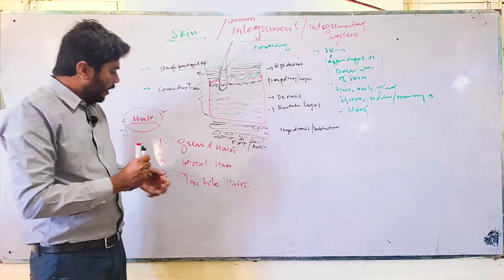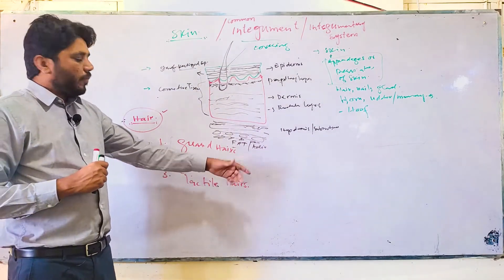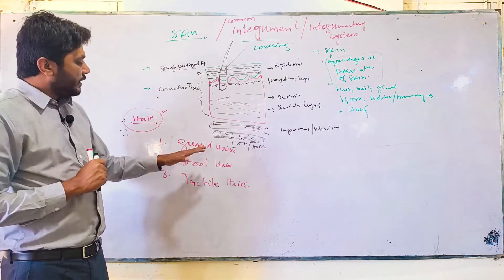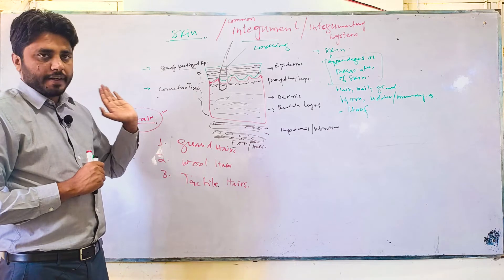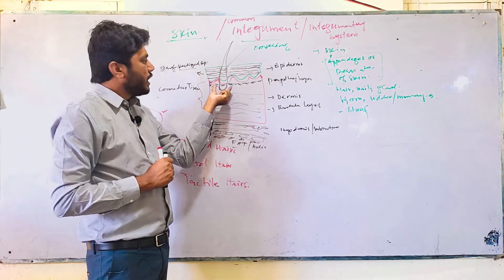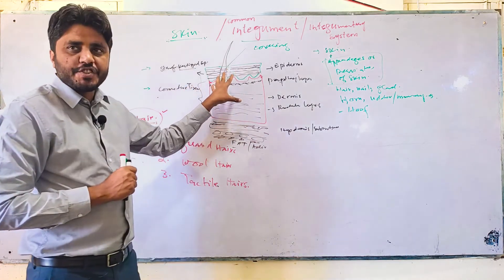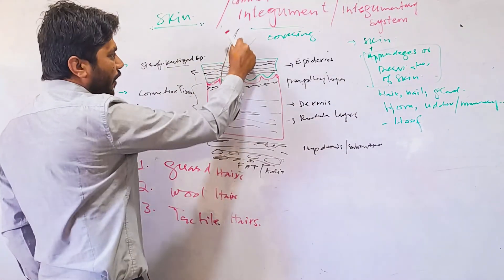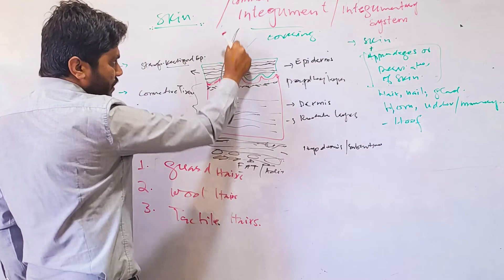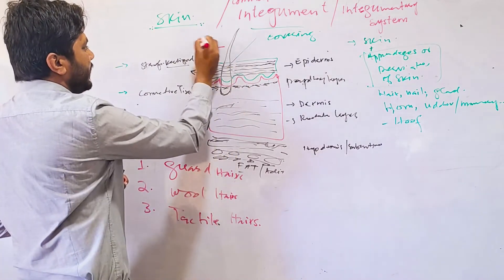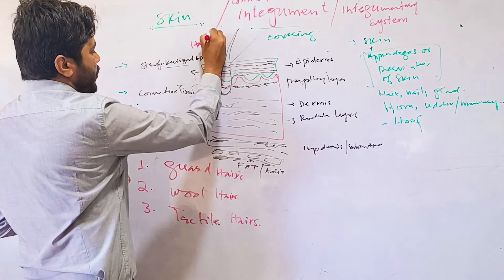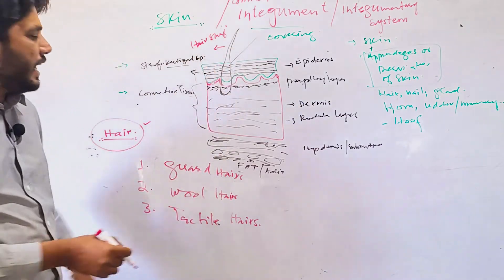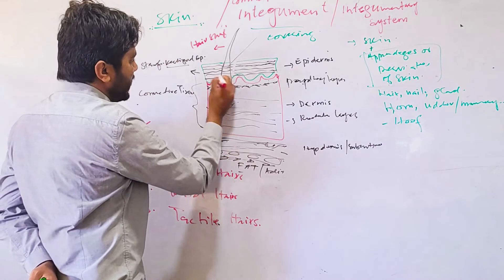What is the difference between tactile hair and other types? You need to understand the difference in the length of hair. Structurally, you can divide the hair into two areas: the area outside the skin, which is known as the hair shaft, and the area under the skin, which is known as the hair root.